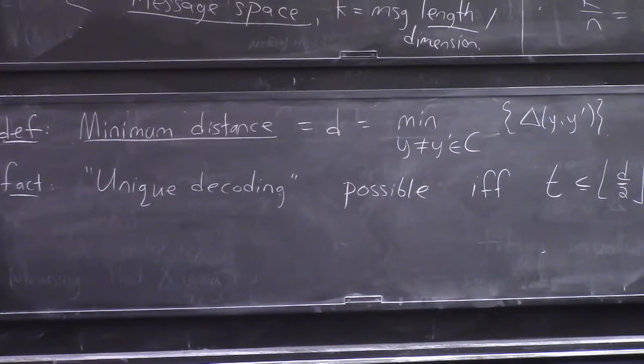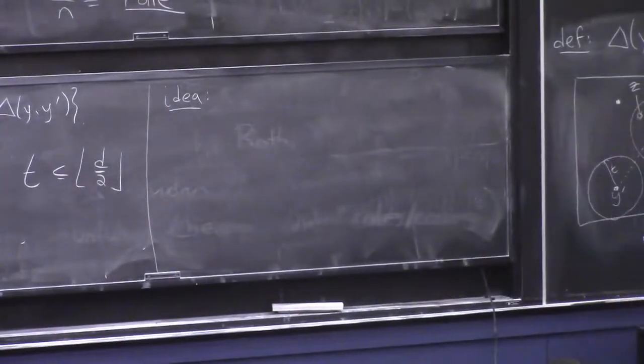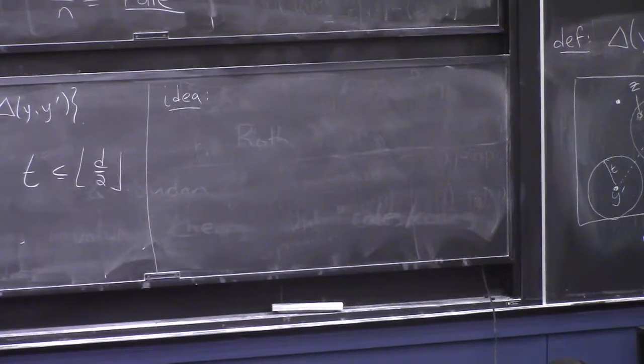So at least if we're not concerned at first with algorithmic issues like how complicated is it to encode strings, to decode them, and so forth, then it becomes sort of a combinatorial question to think about how many strings can we pack into the set of all n-bit strings such that they're all mutually far apart. And one idea you might have for this, a common idea in combinatorial situations like this to get a nice set of strings that are all far apart is to simply pick them randomly.